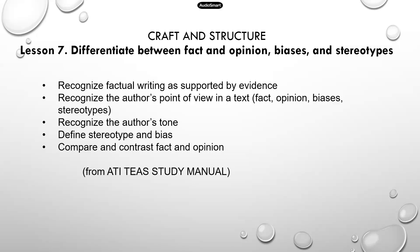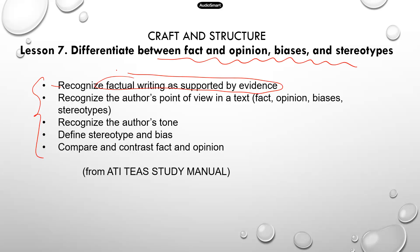The topic today is how to differentiate between fact and opinion, biases, and stereotypes. Here are the learning objectives. First, you need to be able to recognize factual writing as supported by evidence. This is about supporting an argument or position using evidence. For example, if the author wants to say Alice is a nice person, then the author needs to support that statement with evidence — like Alice volunteers at the local food bank every weekend. That's a piece of evidence that can suggest that Alice is a kind person.